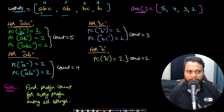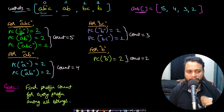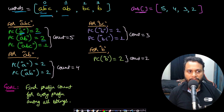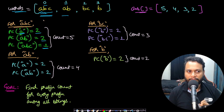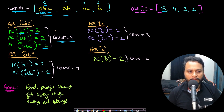The next prefix of 'abc' is 'ab', which occurs as a prefix in both 'abc' and 'ab', so the count is two. For 'abc' itself, it is a prefix only in 'abc', contributing a count of one. So for words[0] = 'abc', the total across all its prefixes is 2 + 2 + 1 = 5, which is inserted into our answer array.